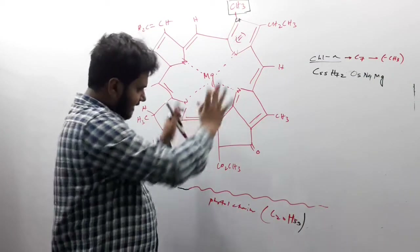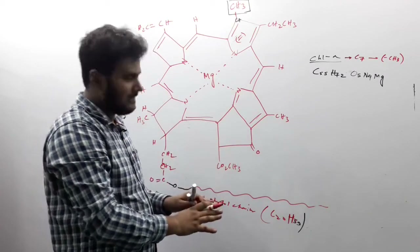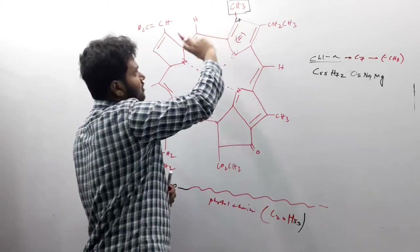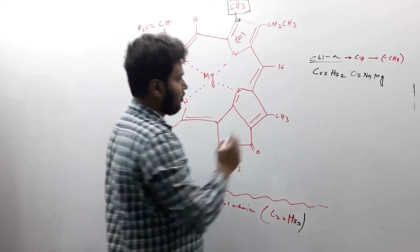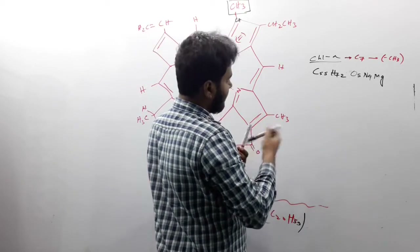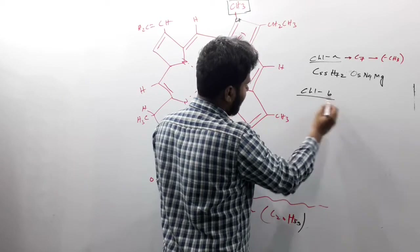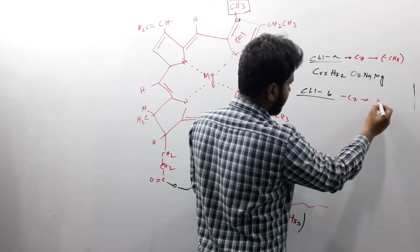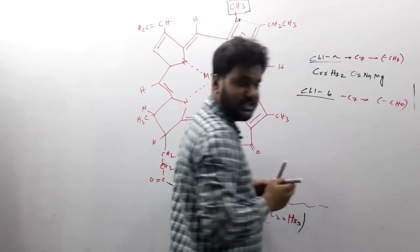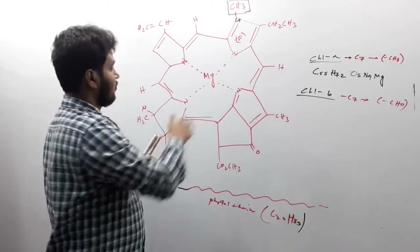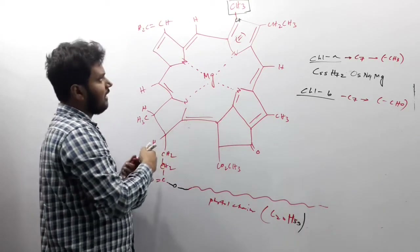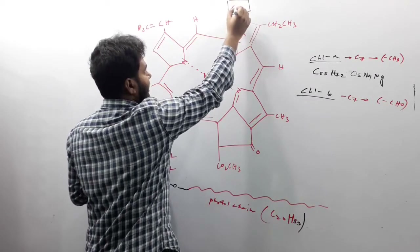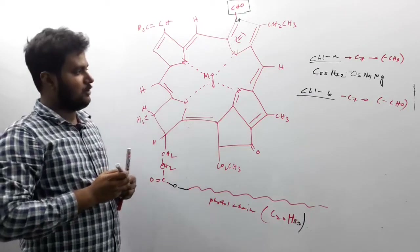In case of chlorophyll B, everything will remain as it is except the C7 position. The methyl group will be substituted by an aldehyde group. So in case of chlorophyll B, at C7 position there will be one aldehyde group — a CHO group. So if we want to convert chlorophyll A into chlorophyll B, we have to erase the methyl and write one aldehyde group.